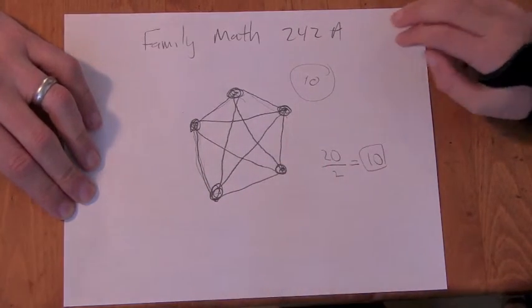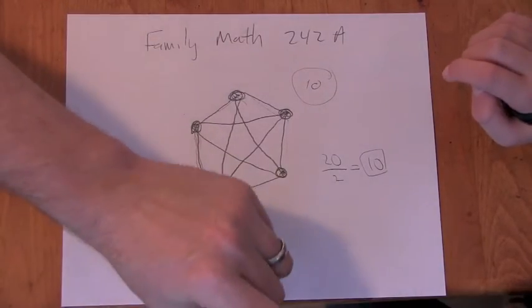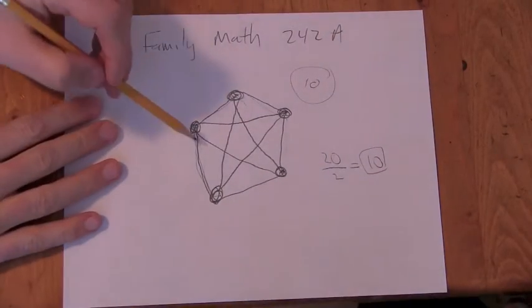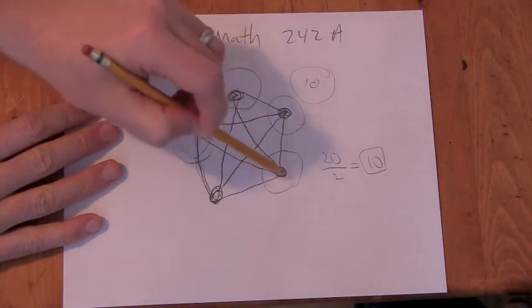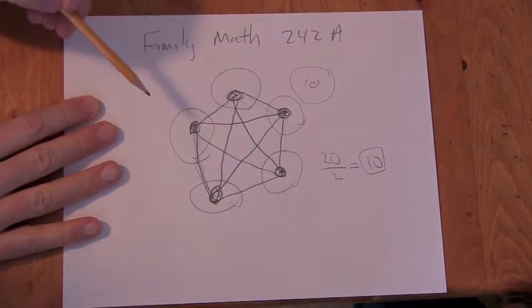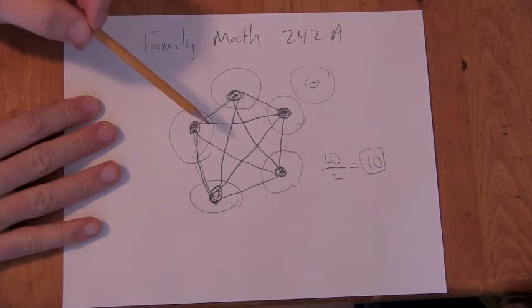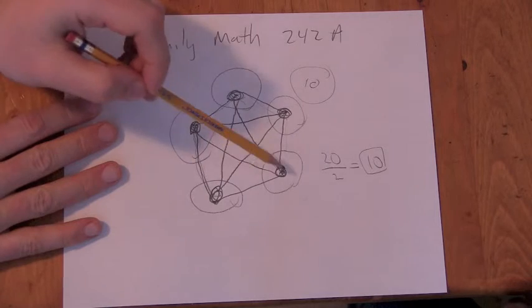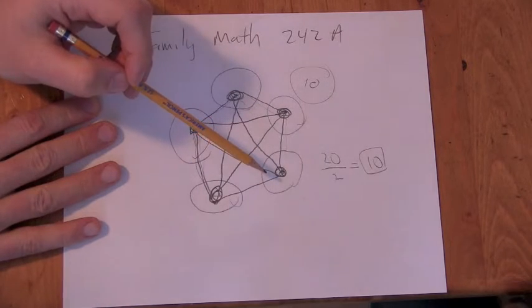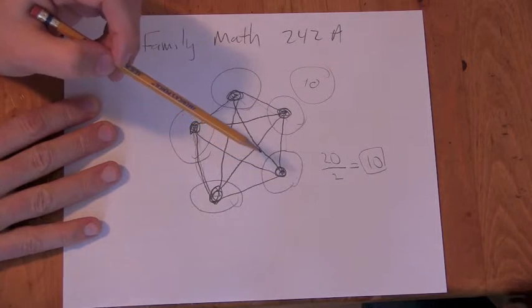So those are both very interesting counting arguments. Each vertex has four line segments coming out of it. So you might be tempted to say, well, there's five vertices and four line segments per vertex, so that's twenty.